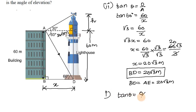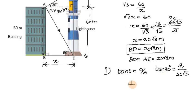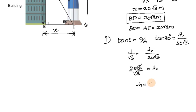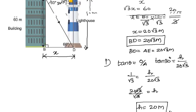bd equals 20 root 3 meters. Using this value: h divided by 20 root 3 equals 20 root 3 divided by root 3, so root 3 cancels out, giving h equals 20. Therefore the height of the lighthouse is 20 meters.